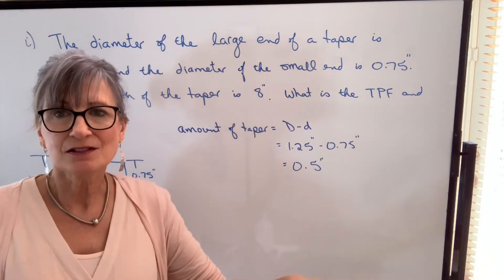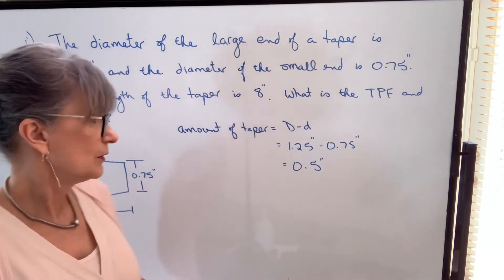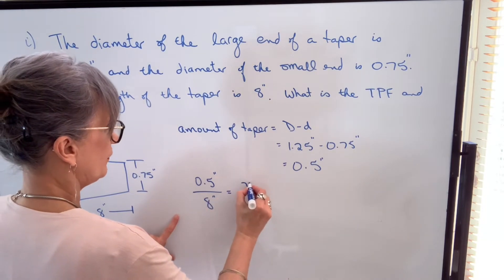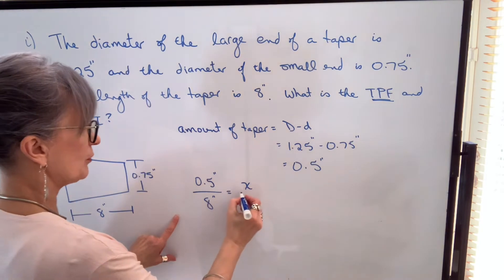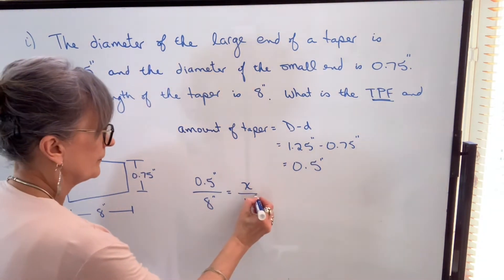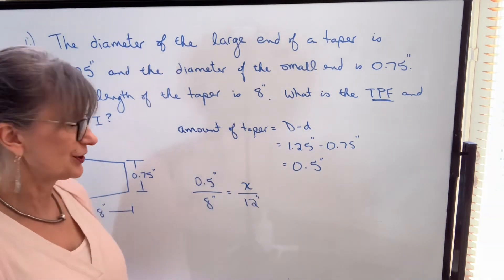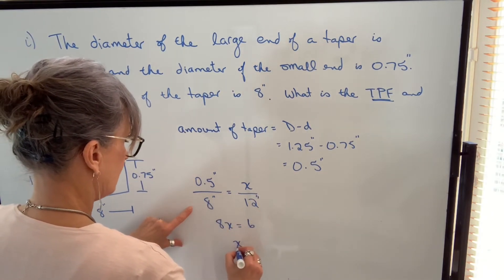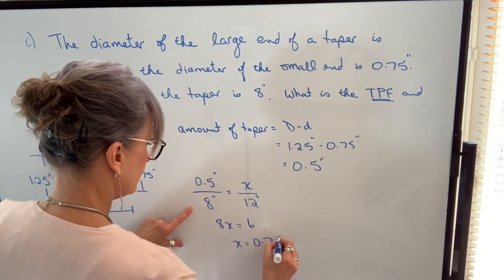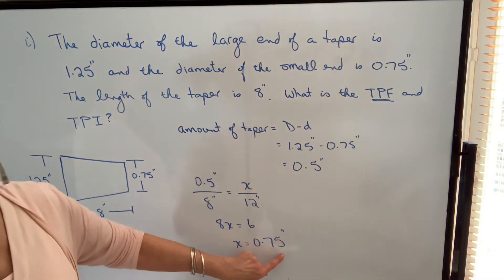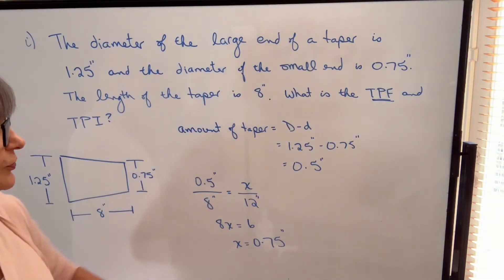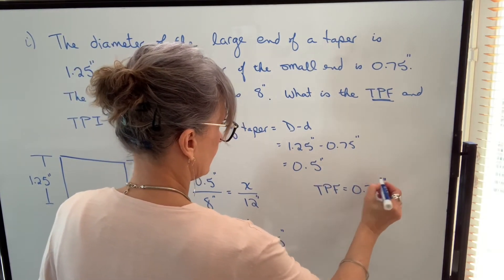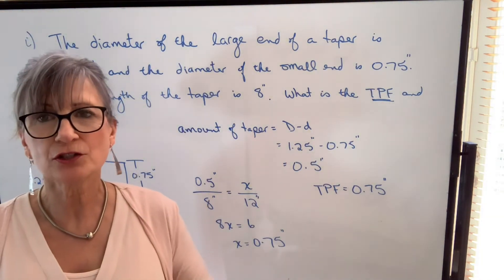That rate of taper is consistent regardless of the length of the piece. So we're going to set it up: half an inch over 8 inches is equivalent to how much it tapers over 12 inches — that's taper per foot. Direct proportion. We cross multiply, so 8x equals 6. Divide both sides by 8, and we get a taper per foot equivalent to 3/4 of an inch. That means it tapers 3/4 of an inch over 12 inches of length.